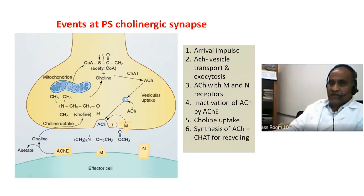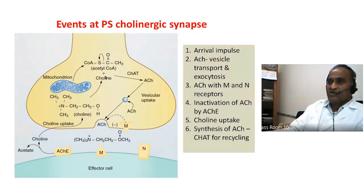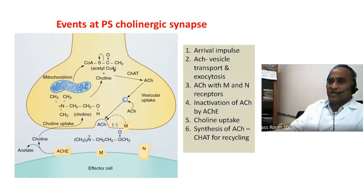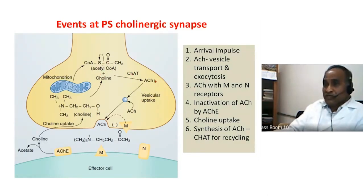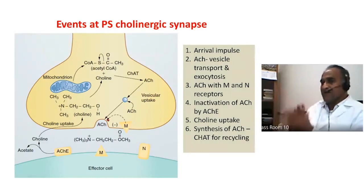The choline is recycled: acetylcholine is metabolized into choline and acetate. The acetate enters the Krebs cycle as acetyl-coenzyme A, and choline is taken back up. Acetyl-coenzyme A plus choline are joined together by the enzyme choline acetyltransferase to form acetylcholine, which is then packaged back into vesicles.